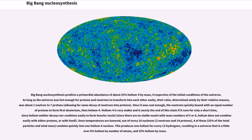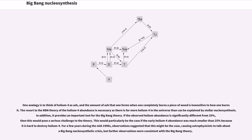Once temperatures are lowered, out of every 16 nucleons, 4 of these combine quickly into 1 helium-4 nucleus. This produces 1 helium for every 12 hydrogens, resulting in a universe that is a little over 8% helium by number of atoms, and 25% helium by mass. One analogy is to think of helium-4 as ash, and the amount of ash that one forms when one completely burns a piece of wood is insensitive to how one burns it.